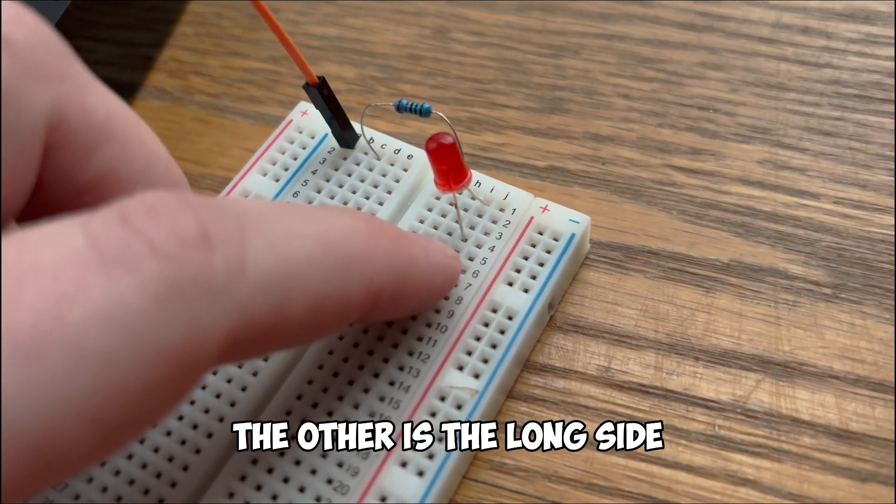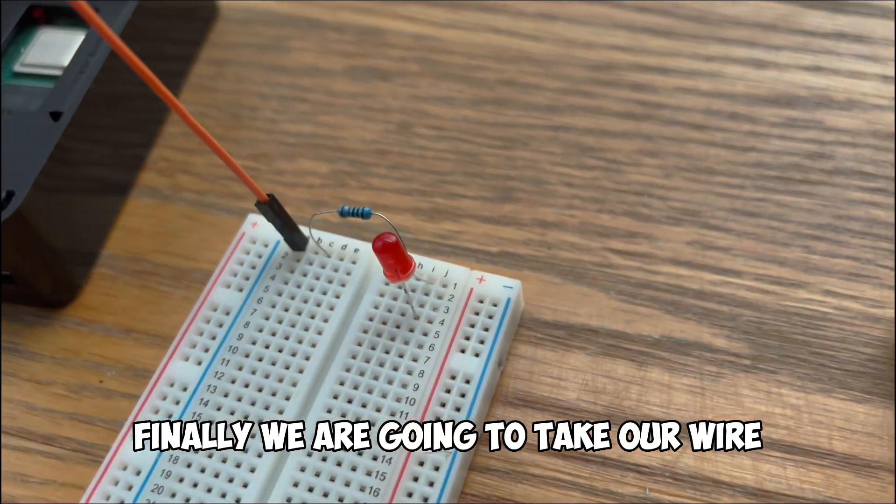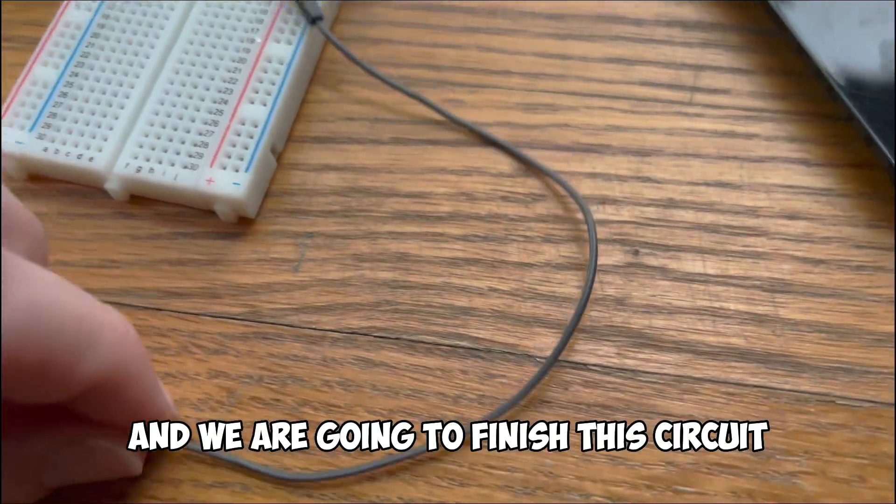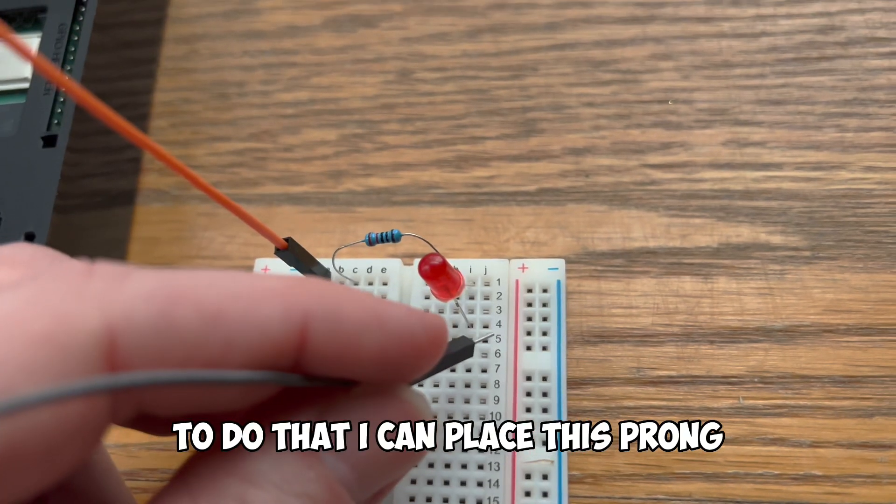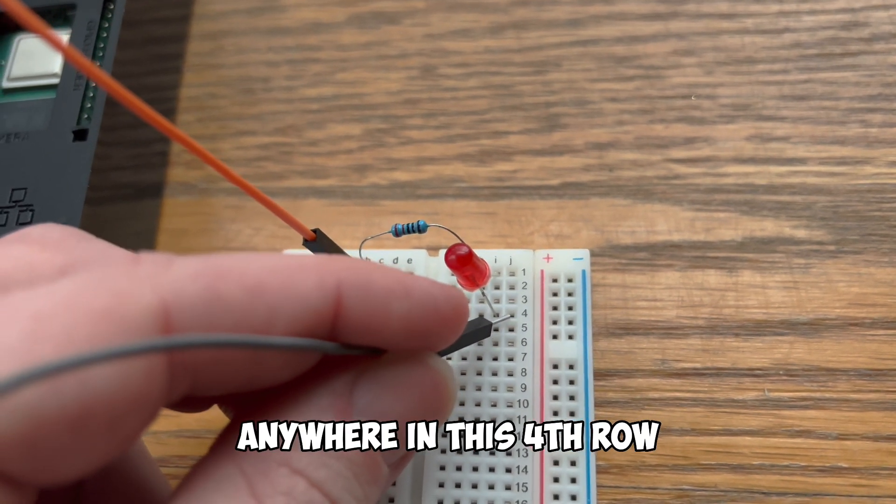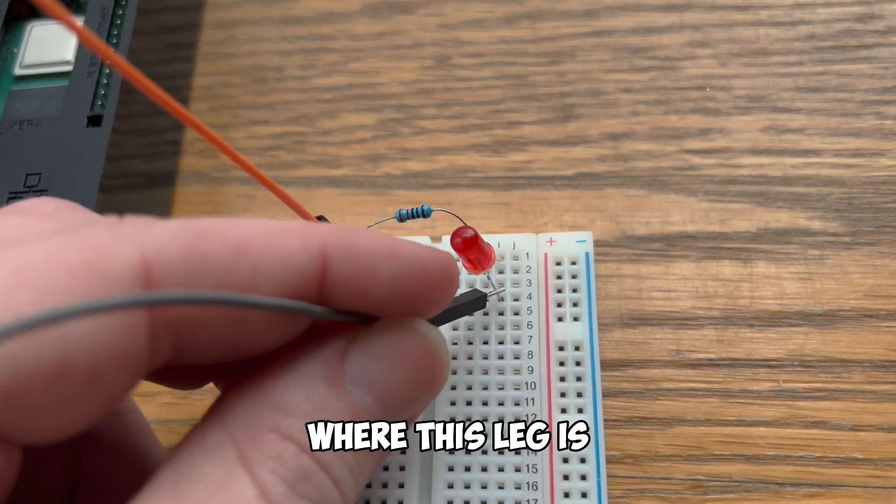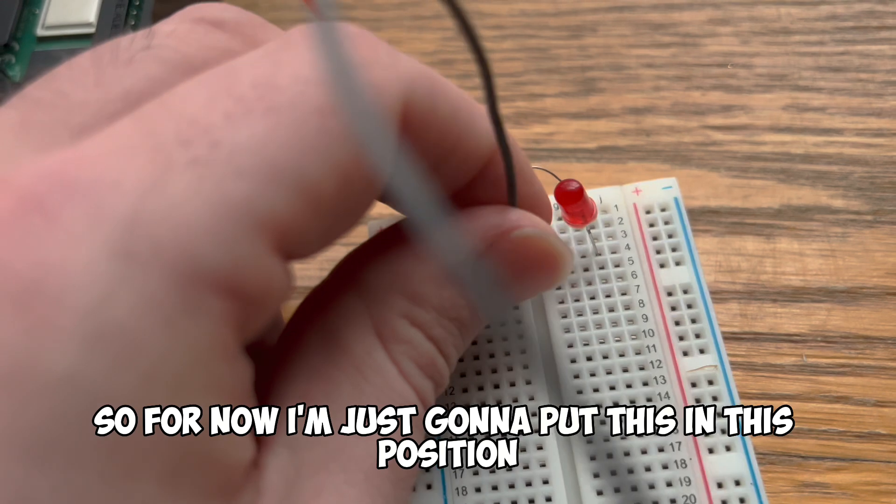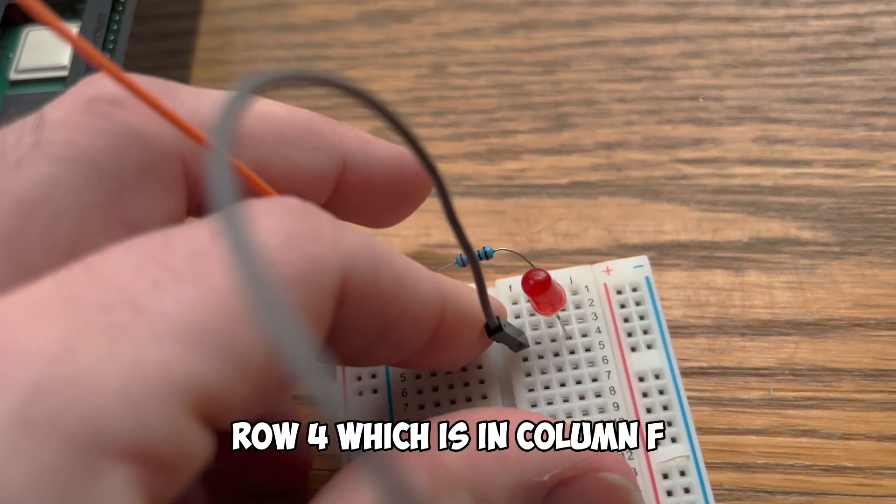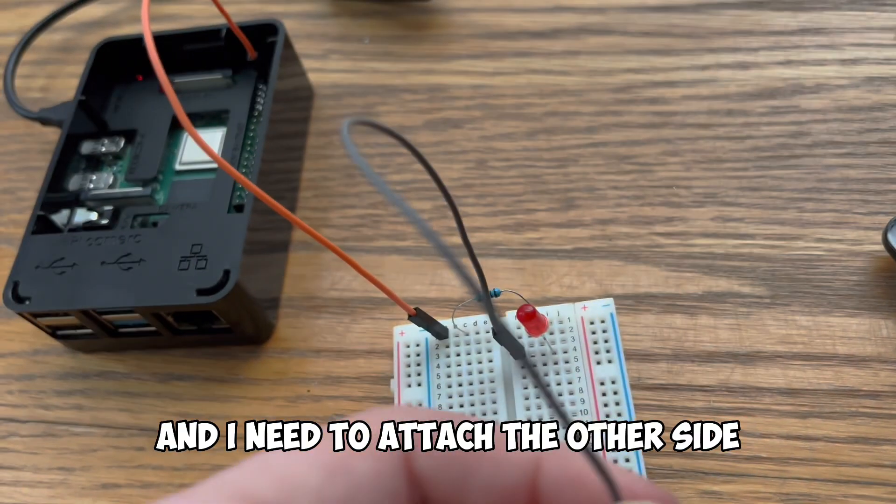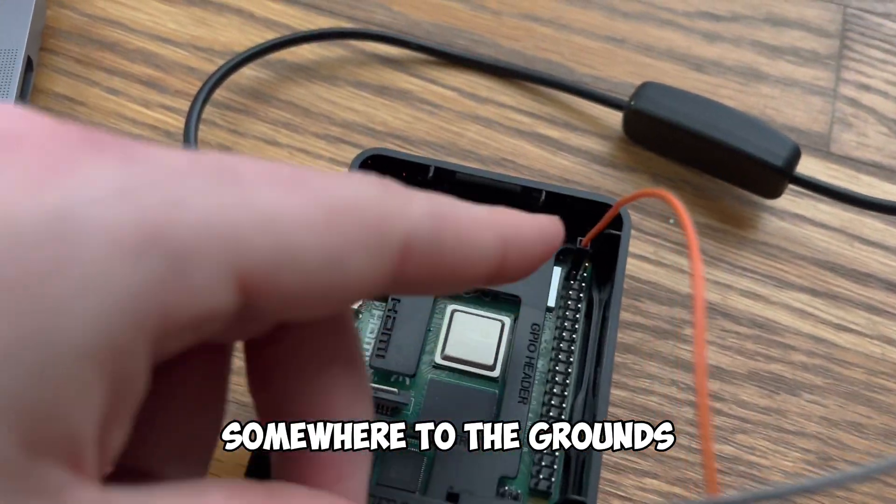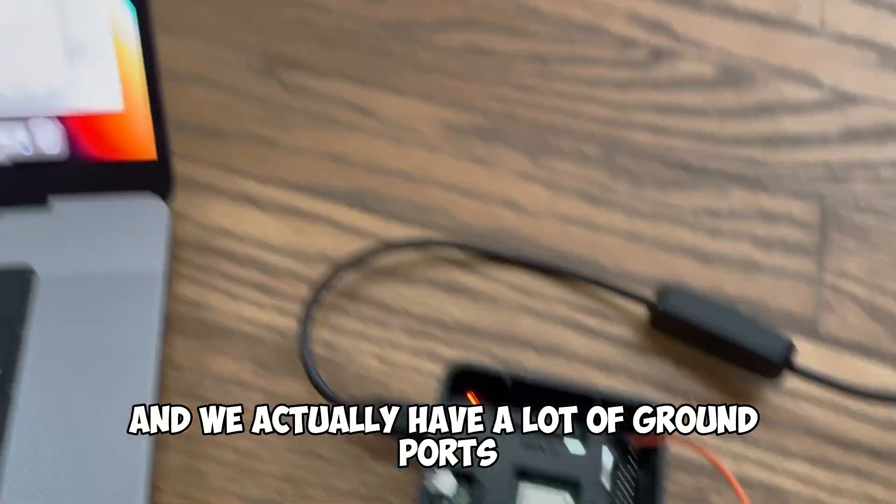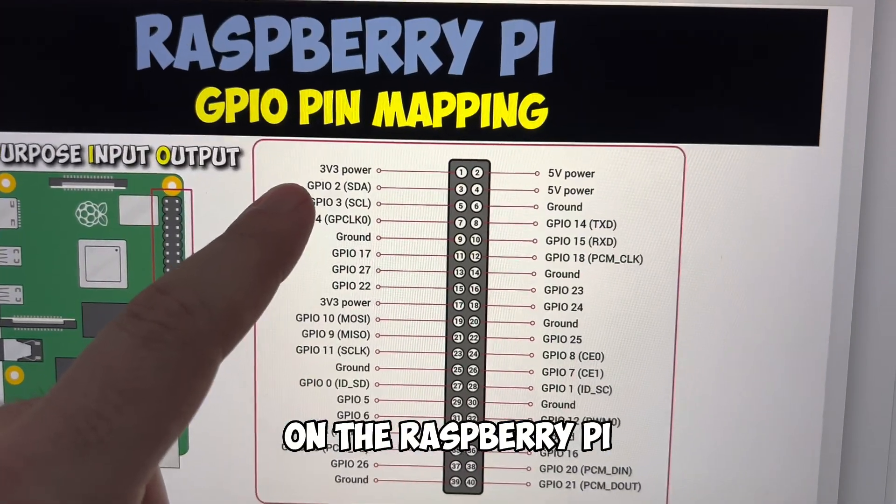But you can see that I have now placed that in row 1 and row 4. This is the short side, the other is the long side. Finally we are going to take our wire and we are going to finish this circuit. To do that I can place this prong anywhere in this fourth row where this leg is. So for now I'm just going to put this in this row 4 which is in column F as you can see and I need to attach the other side somewhere to the grounds.